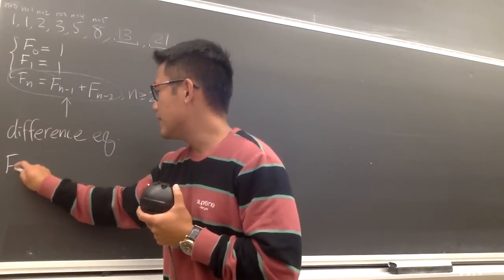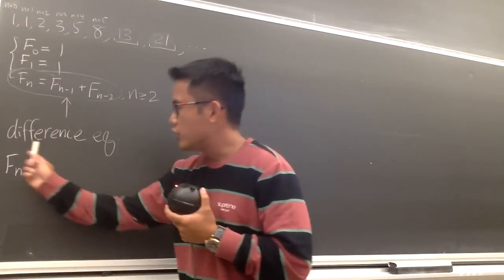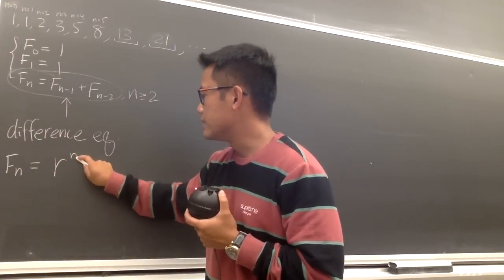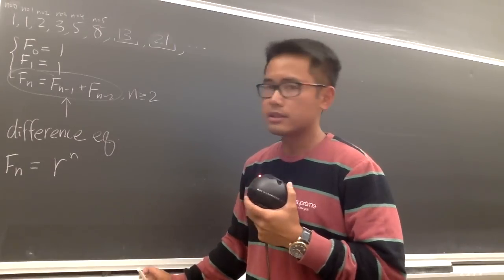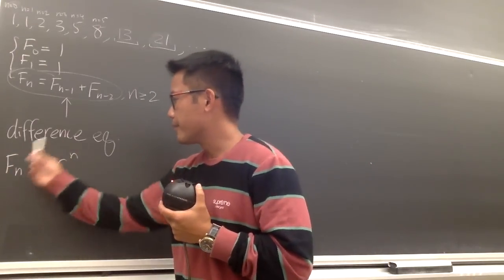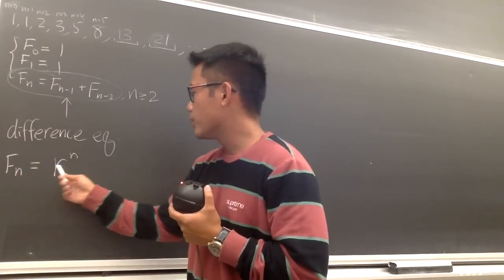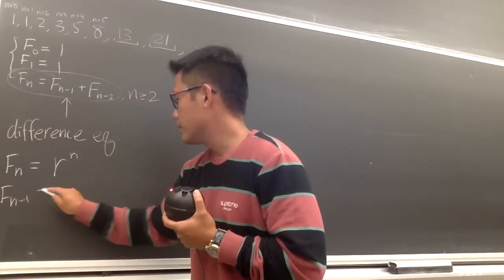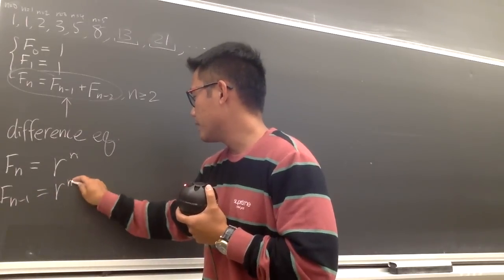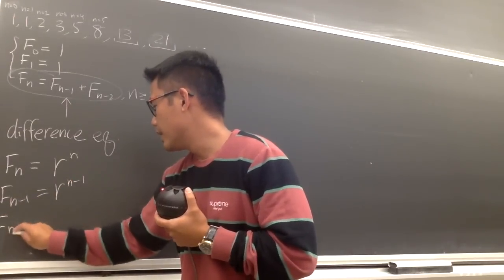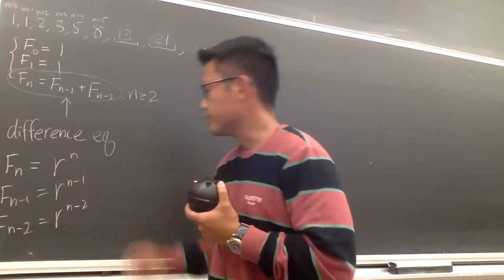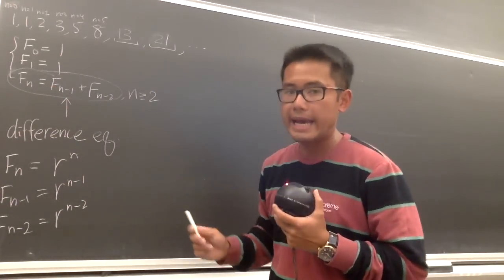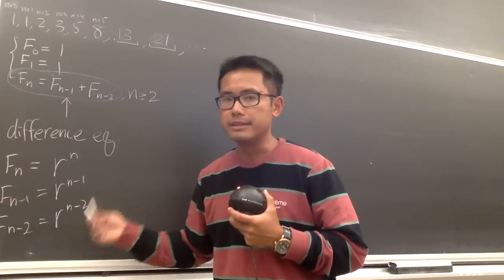To solve this, what I'm going to do is let f equal some number r to the nth power. That's the general form we're going to use. So if f equals r^n, then f(n−1) is r^(n−1) and f(n−2) is r^(n−2). We'll plug all of this into the equation and figure out what r is equal to.